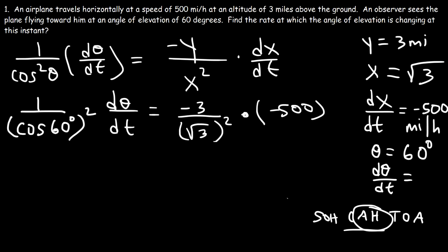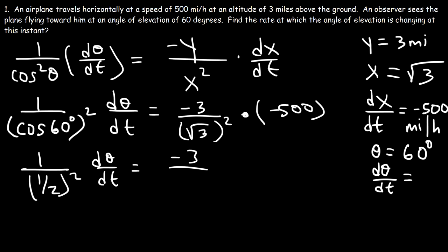So this is going to be 1 divided by (1/2)² times dθ over dt. And that's equal to negative 3. And the square root of 3 squared, the square root and the exponent will cancel. Or you could see it as √3 squared is 3. So that becomes 3. Now going back to the left side, 1 squared is 1. 2 squared is 4. So we have 1 over 1/4 times dθ over dt. Negative 3 divided by 3 is negative 1. And negative 1 times negative 500 is positive 500.